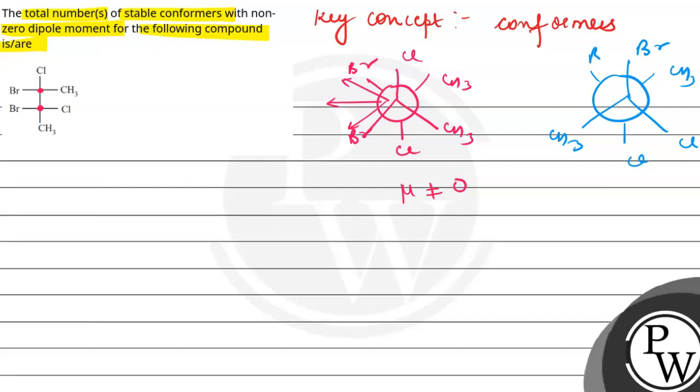CH3 and BR. So if we can see here, dipole is in this direction. Either it will be in this direction or the net dipole has to be in this direction. So it is also not zero.